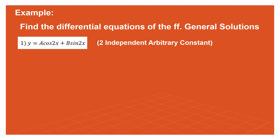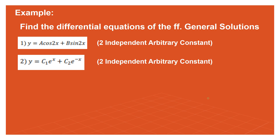Example number two: y = C1·e^x + C2·e^(-x). We also have two independent arbitrary constants, so we derive twice. This is Equation 1. First derivative: y' = C1·e^x - C2·e^(-x). This is Equation 2.